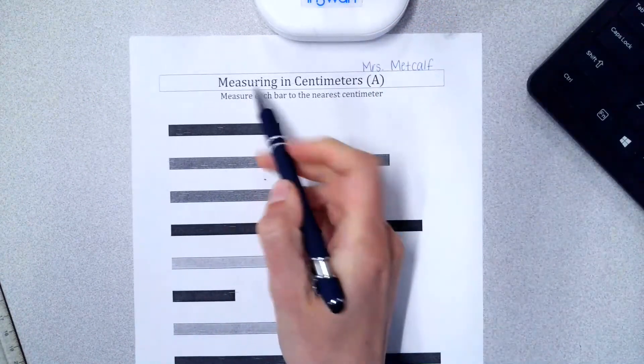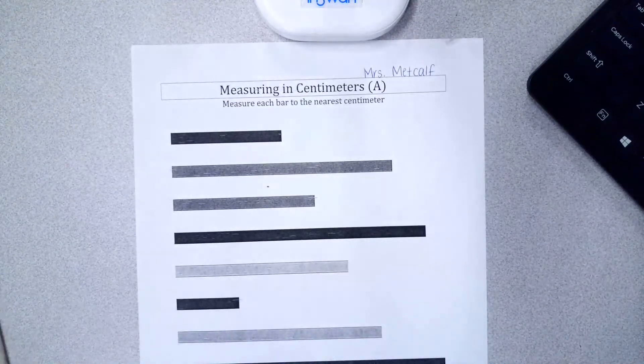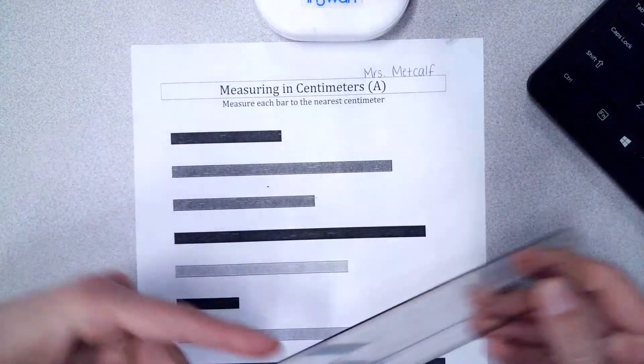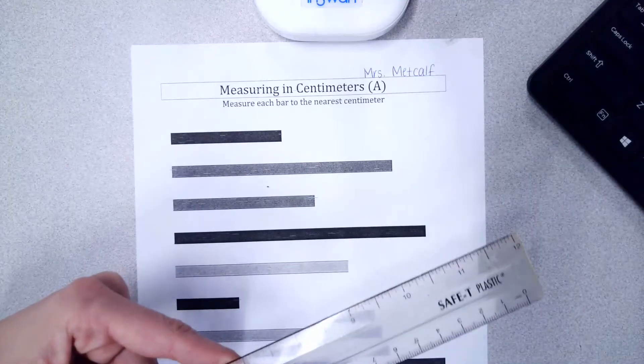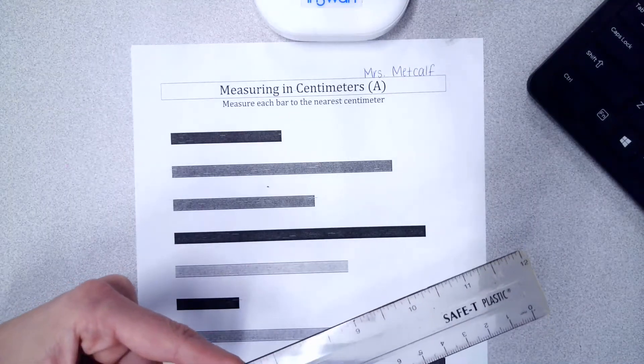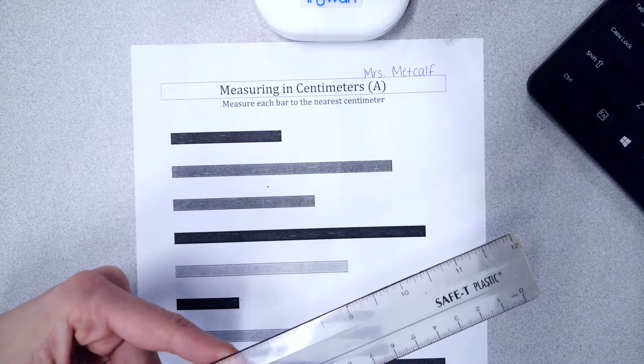And this one again says measuring in centimeters, so if you have not gotten a ruler yet, you're going to go to the front of the room, grab it from the top drawer of the green, the three green drawers that are up there, and we need to find the centimeter side.